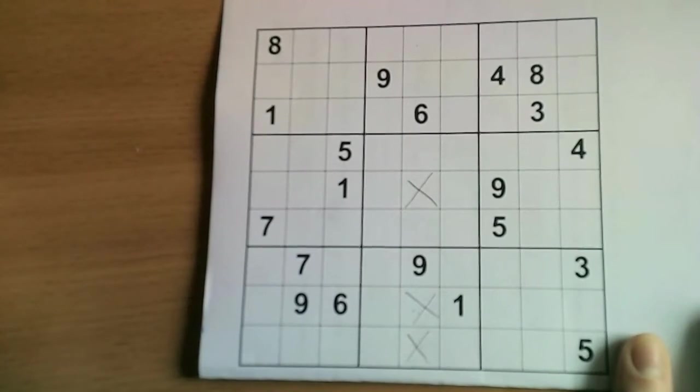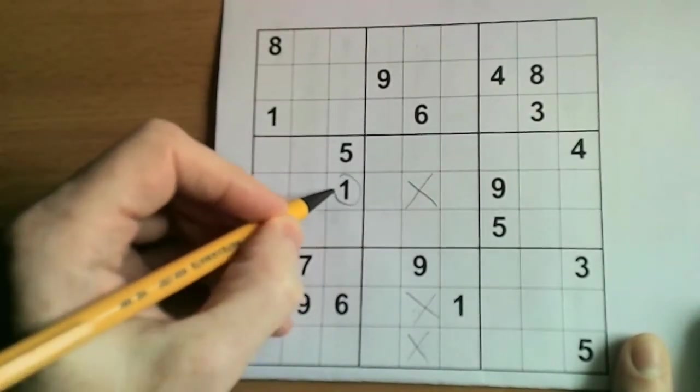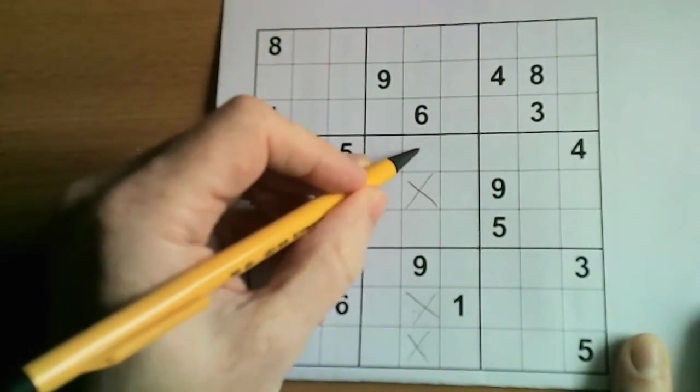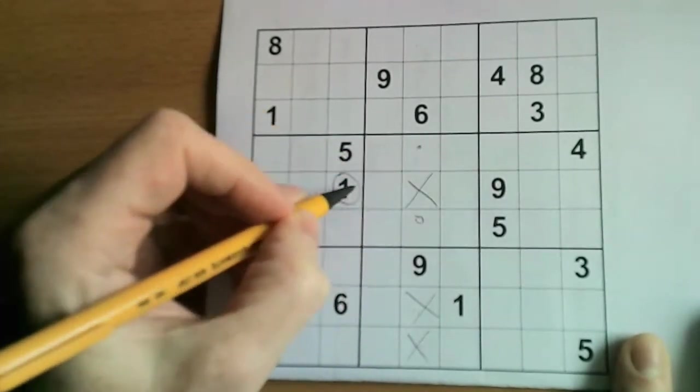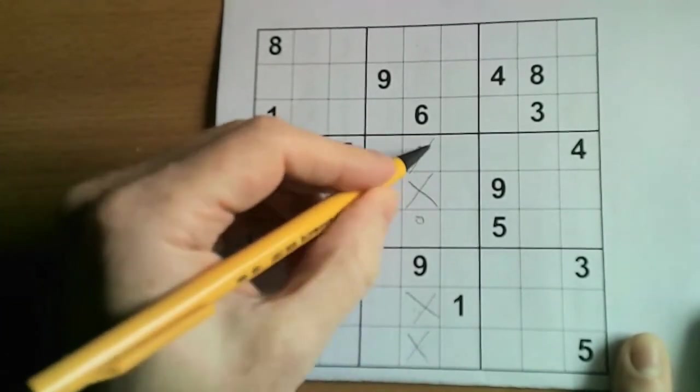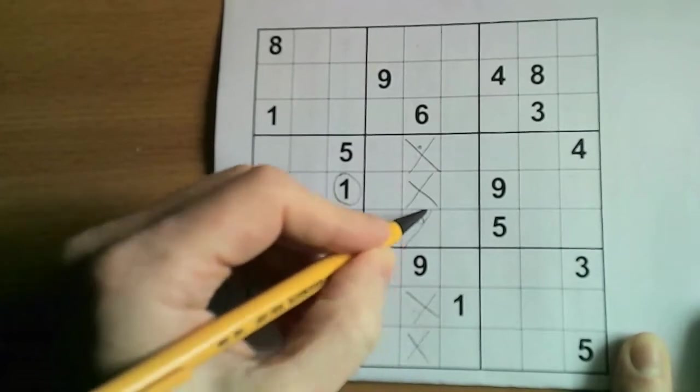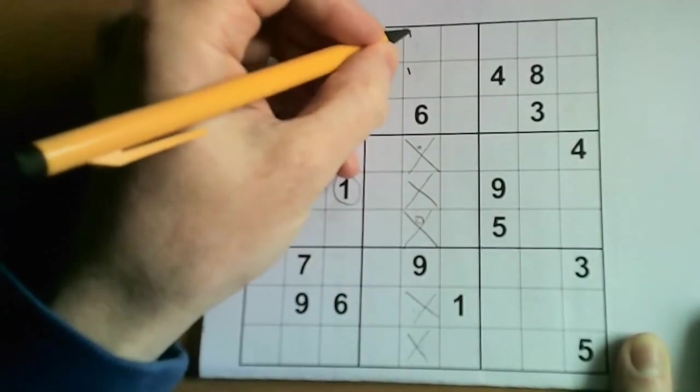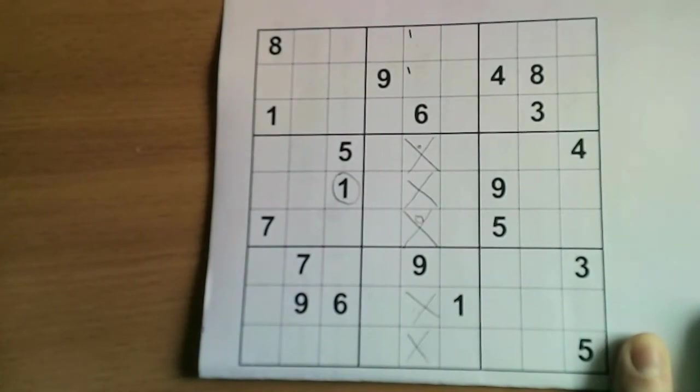However, this is not normal Sudoku, it's an Anti-Knight Sudoku. And that means we can use this one to help us narrow down the options further, because this square and this square are both a Knight's move away. And therefore, in this version of the puzzle, they cannot contain the one, and therefore we can pencil mark the one there or there.